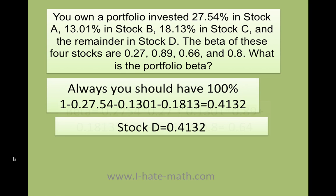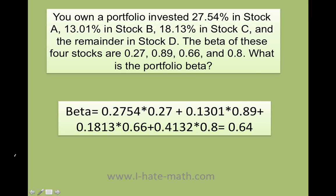Now that we have this information, we can go ahead and figure out what the portfolio beta is. You just do the weight of each stock times its beta, and you do that for all four stocks. Then you add all of that together, and you finally get the portfolio beta, which in this case is 0.64.